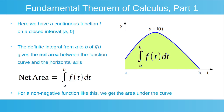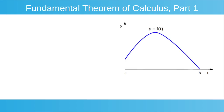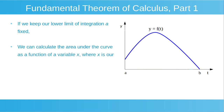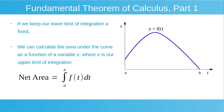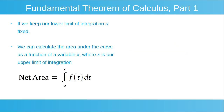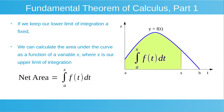For a non-negative function like this, we get the area under the curve. If we keep our lower limit of integration a fixed, we can calculate the area under the curve as a function of a variable x, where x is our upper limit of integration. So we can calculate the net area as being equal to the integral from a to x of f dt. Looking at our plot on the right-hand side, the shaded green area can be calculated as the integral from a to x of f dt.